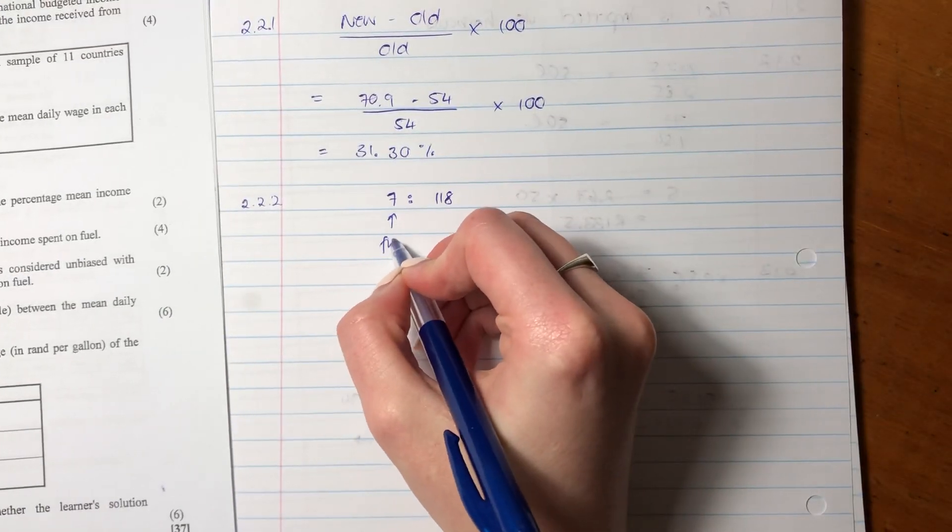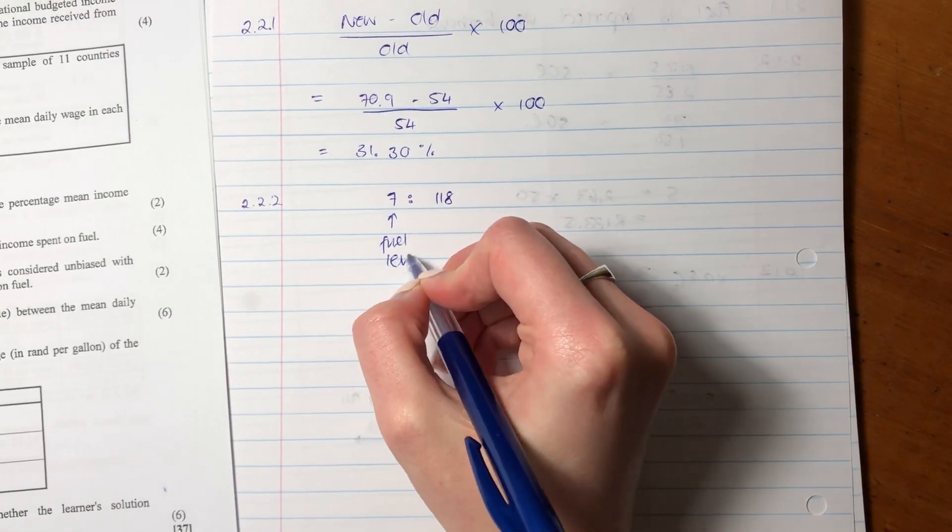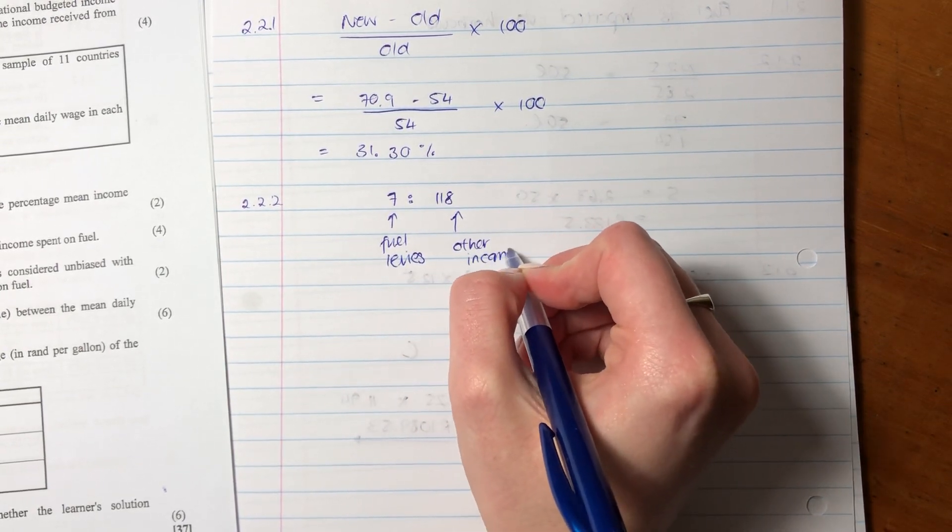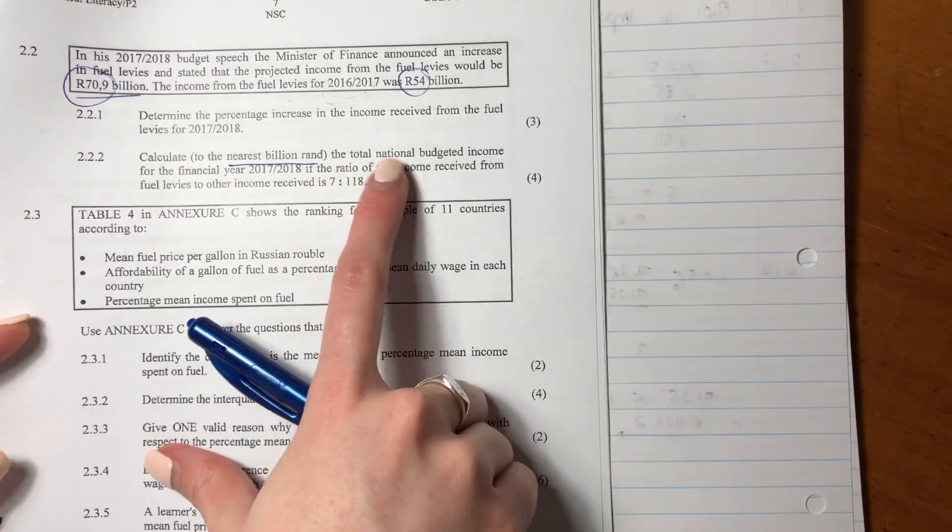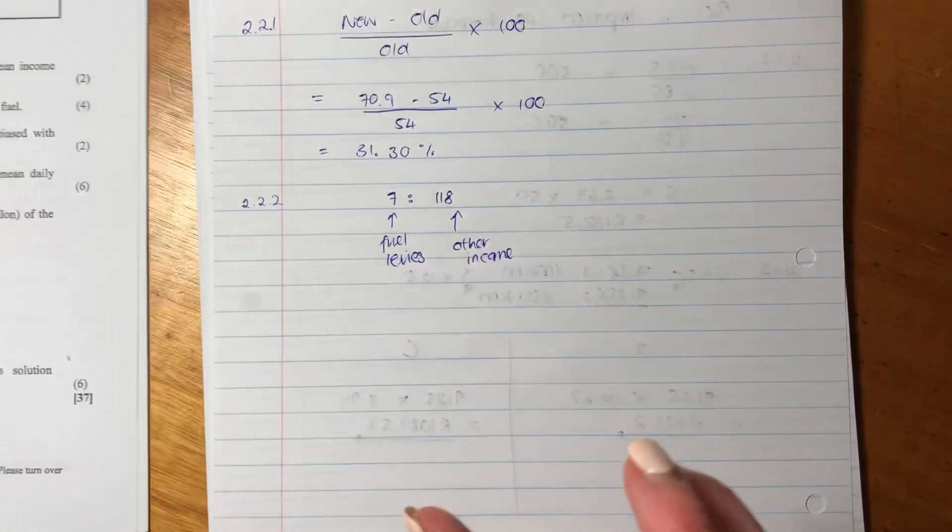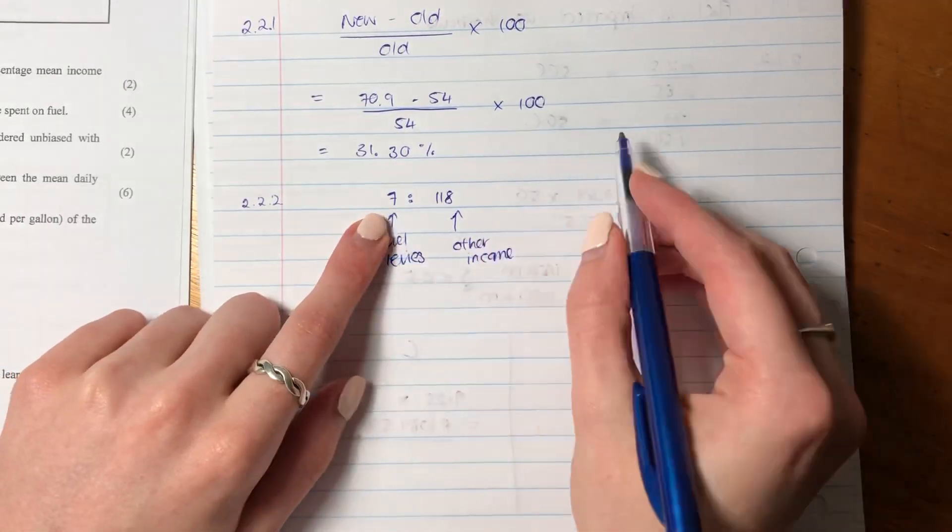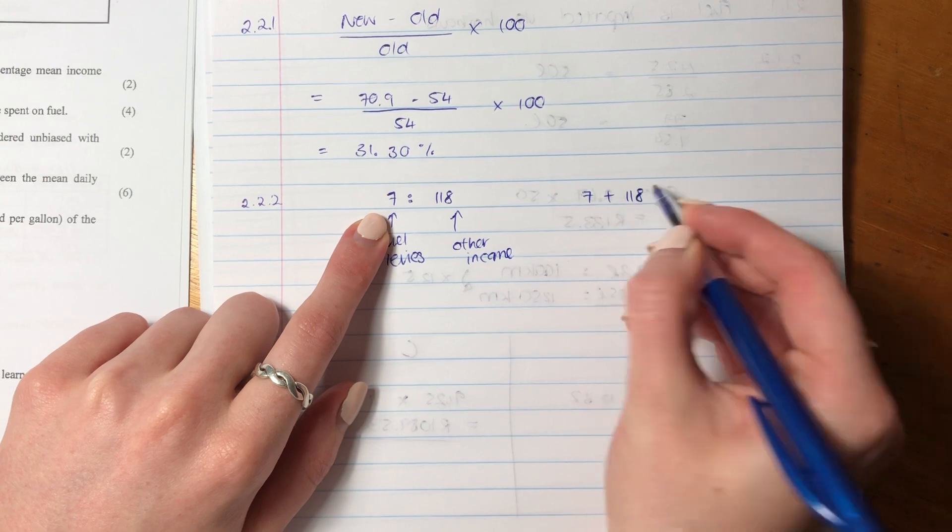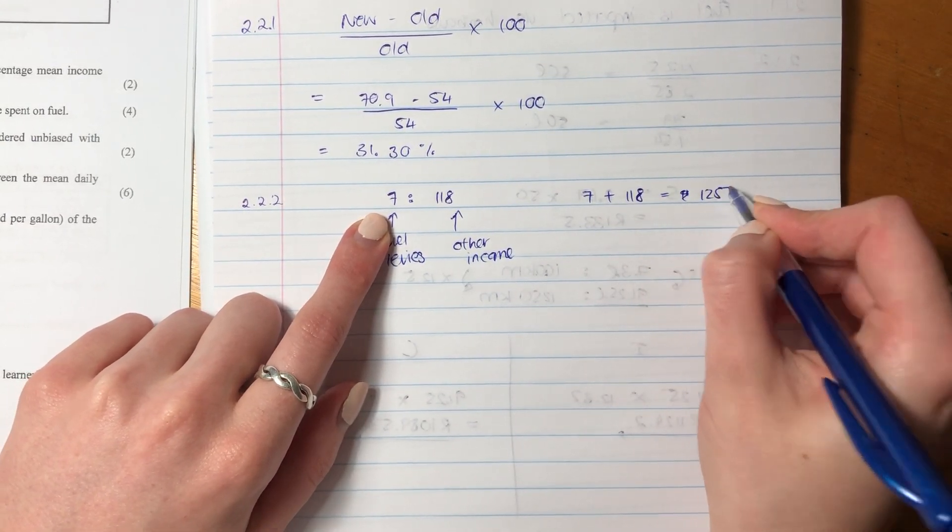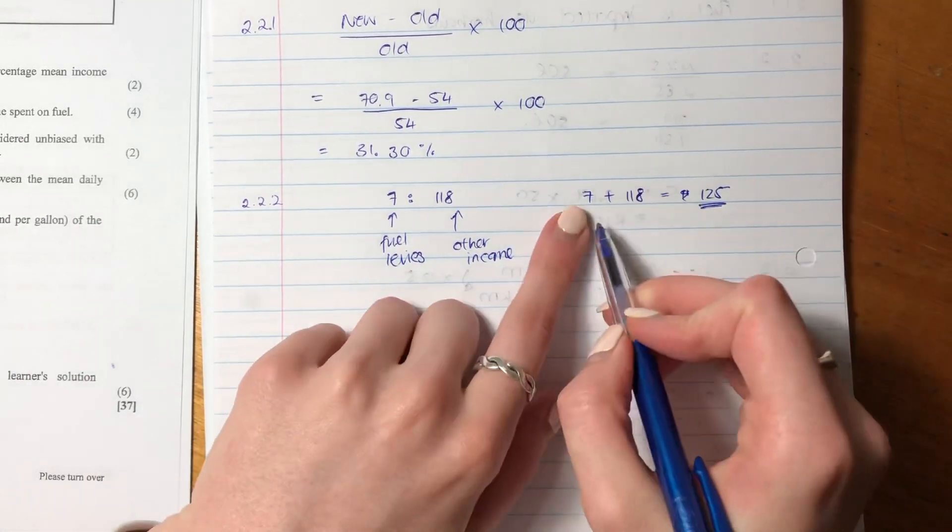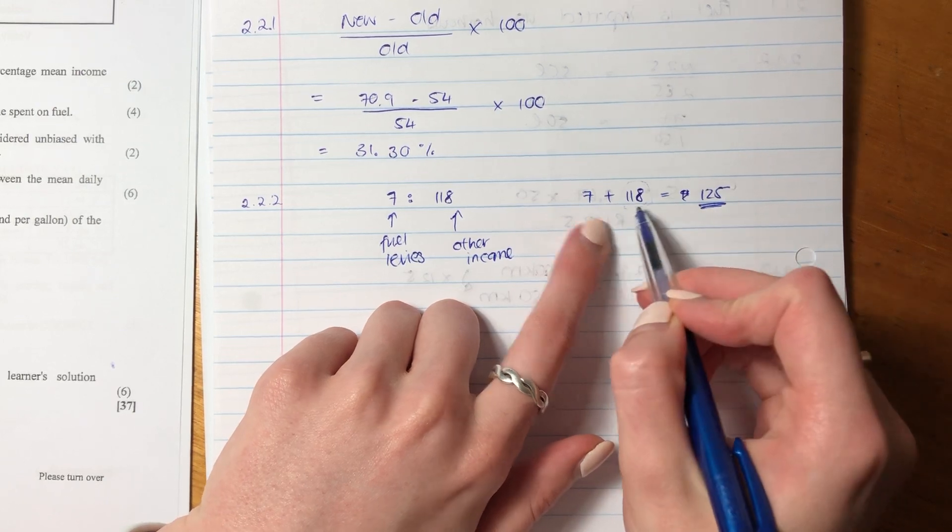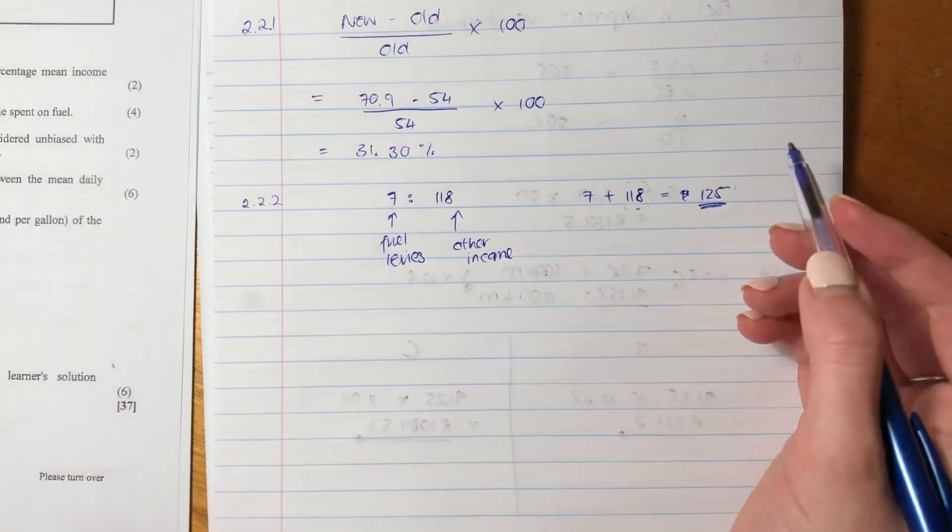The total national budgeted income for the financial year, if the ratio of the income received from fuel levies to other income. So this is fuel levies, and this is other income. So what is it asked for? It's asked for the total national budgeted income. So we need to find out what the total is. So basically, if we add in this ratio, we want to add 7 plus 118, and that would give us 125.